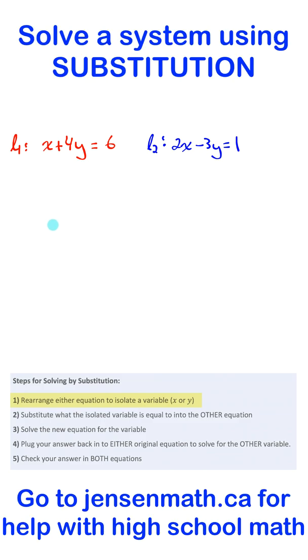Step 1 tells us we have to pick one of the variables in either of these equations to isolate. So I noticed the x in line 1 has a coefficient of 1. So let's isolate that.